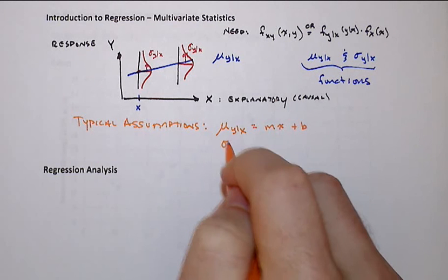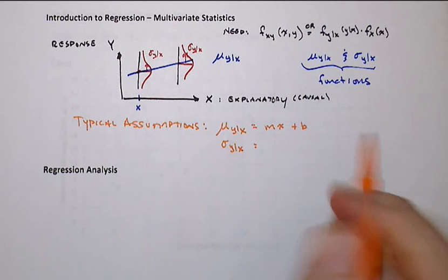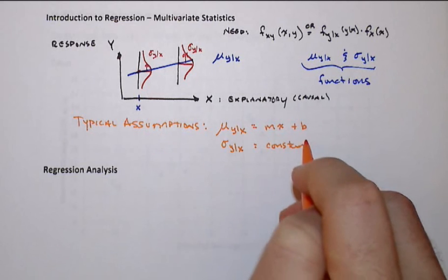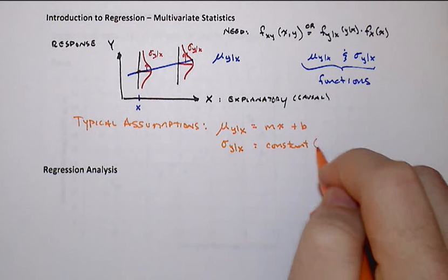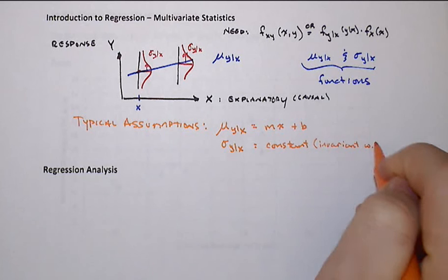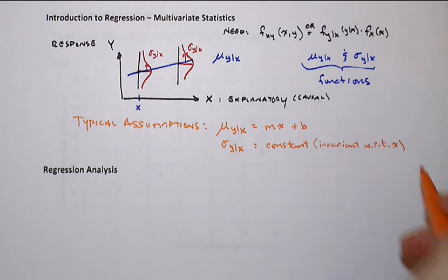And then, that we have a constant scatter about that. And that's invariant with respect to x.